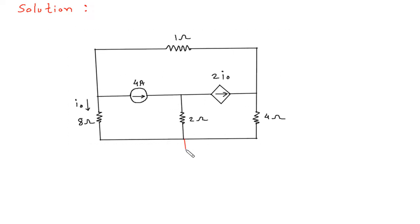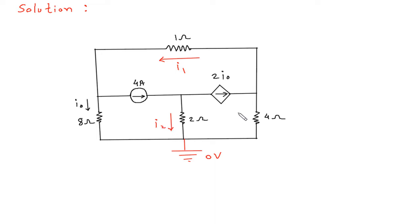Let's assume this is the reference node with zero voltage. This is current I1, this is current I2, this is current I3. Let's say this is node V1, this is node V2, and this is node V3.